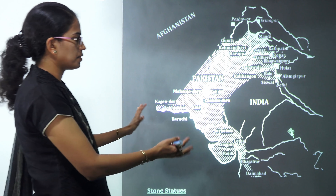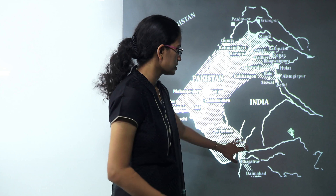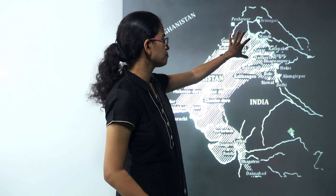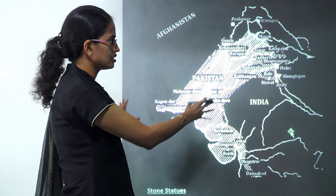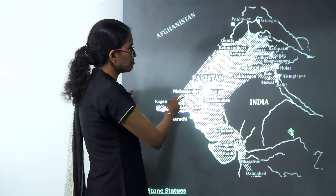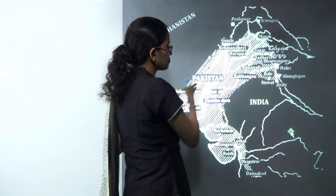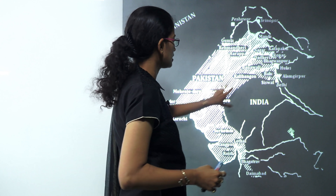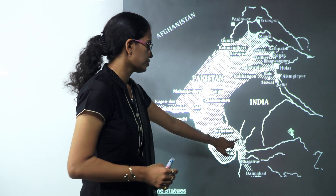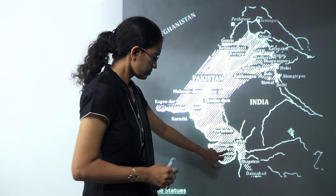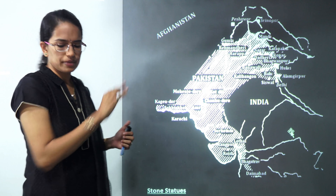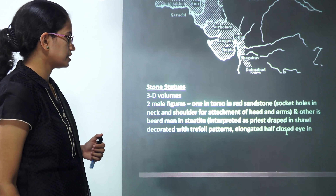If you look at the map of India, towards the west of Rajasthan, parts of Gujarat, and the area now part of Pakistan are the civilization centers of the Indus Valley. You have Mohenjodaro and Harappa, both now in Pakistan. In India, you have Kalibangan in Rajasthan, Lothal and Dholavira in Gujarat, and so on. Those are the major centers of the Indus Valley civilization.